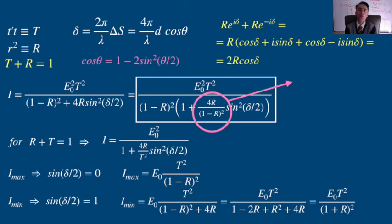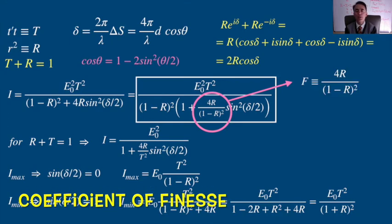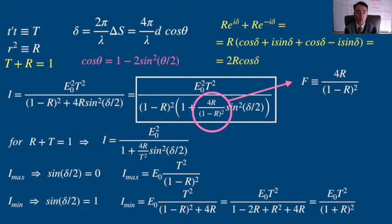Now, let me define this ratio here as the coefficient of finesse. This coefficient is related with how good contrast we can get between bright and dark fringes with the interferometer. While the reflectivity goes from 0 to 1, the coefficient of finesse goes from 0 to infinity, giving a more fine measurement of this contrast.